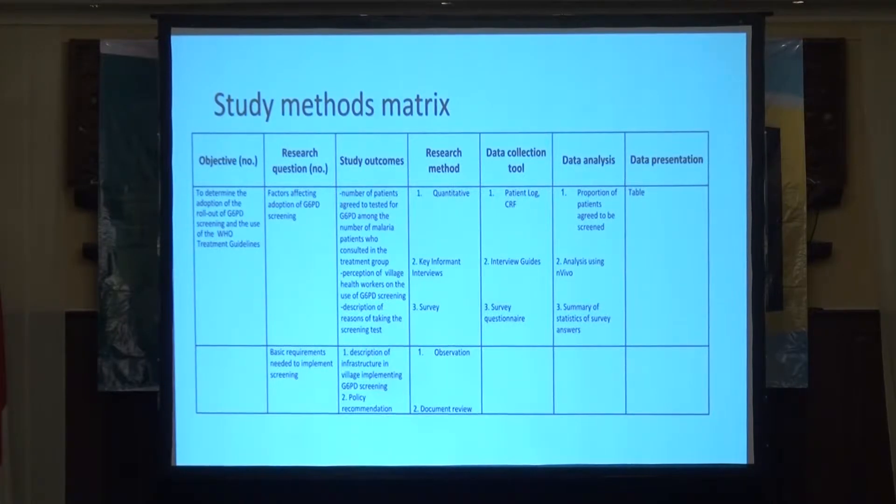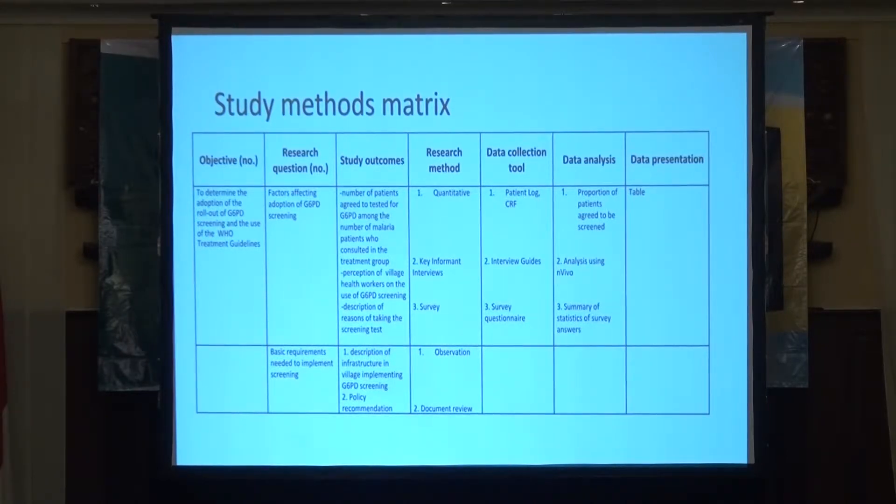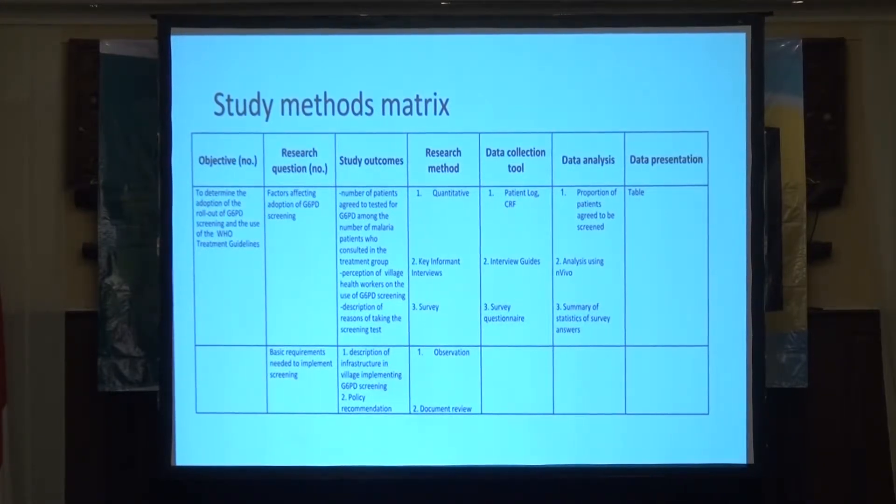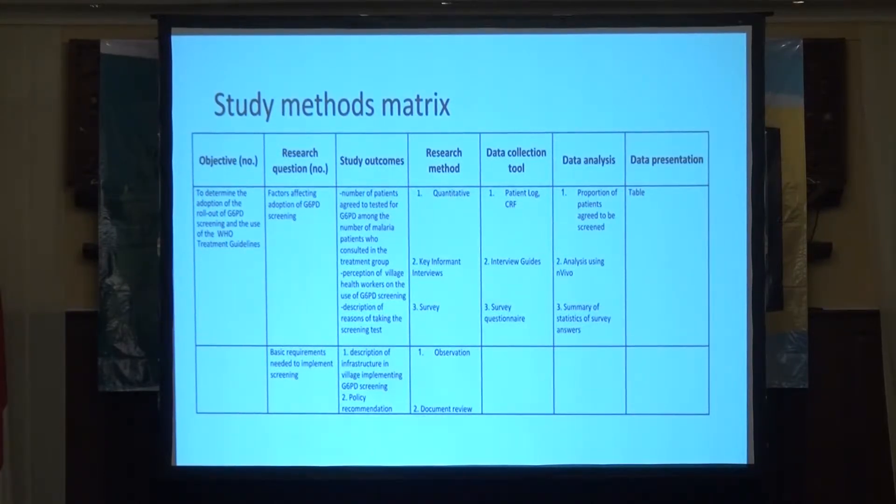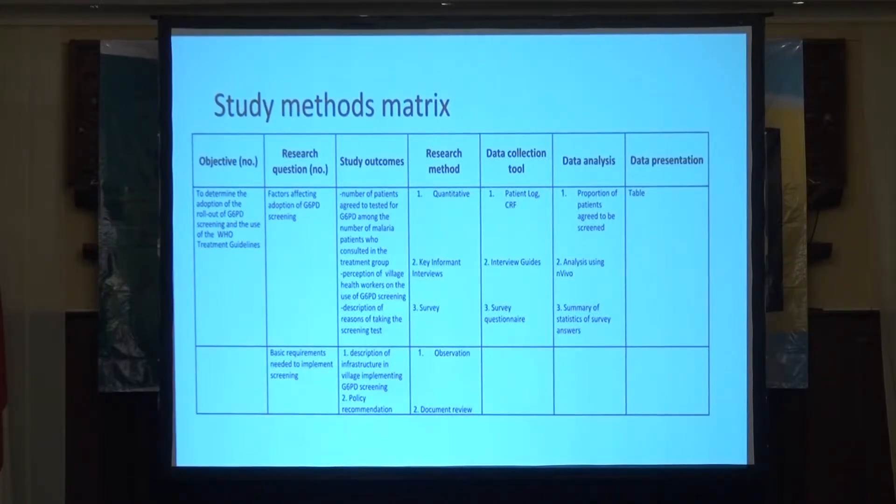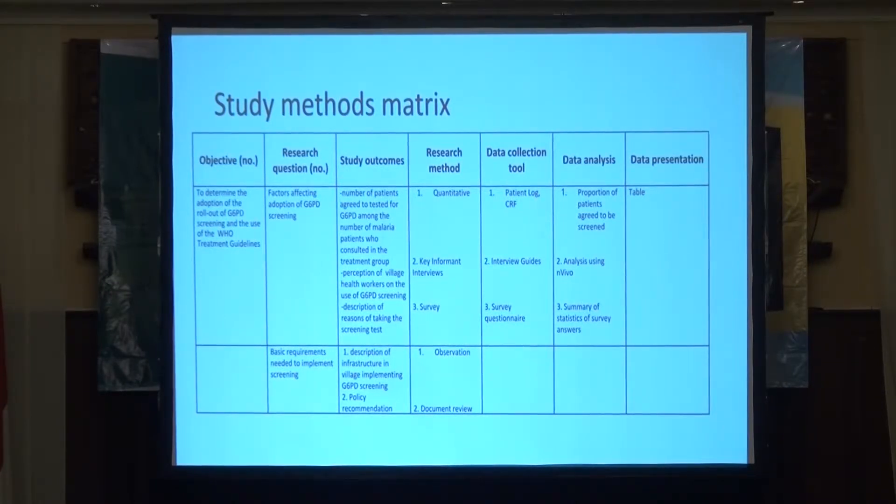For the study methods matrix, for objective number one, which is to determine the rollout of G6PD screening and the use of the WHO treatment guidelines, the research question is factors affecting adoption of G6PD screening. The study outcome is number of patients agreed to be tested for G6PD among all the malaria patients who consulted the treatment group. The research method is quantitative, and the data collection tool will be patient log sheet and the case report form. For data analysis, proportion of patients agreed to be screened, and the data presentation will be table.